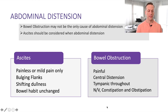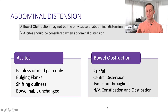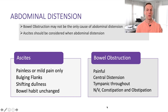A patient with ascites will often have minimal or no pain, classic bulging flanks, shifting dullness on examination, and usually no change in their bowel habit. Compare that to a bowel obstruction: there is usually pain, central distension, tympany throughout, and nausea, vomiting, constipation, and obstipation — which are key features to making the diagnosis of a bowel obstruction.